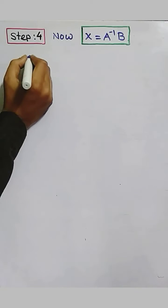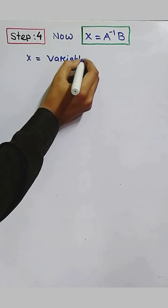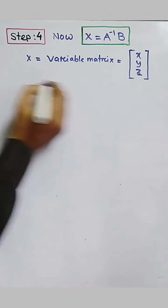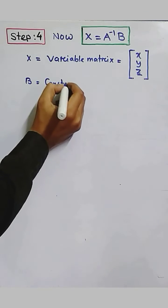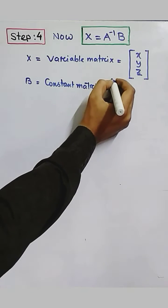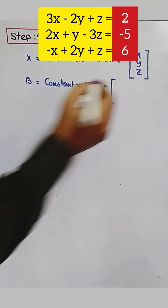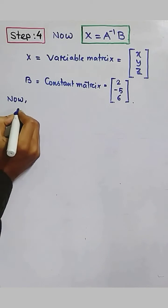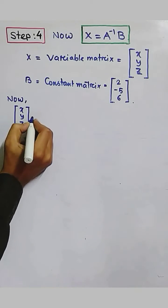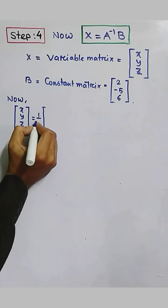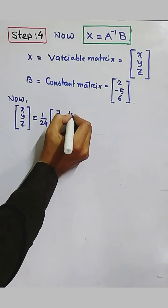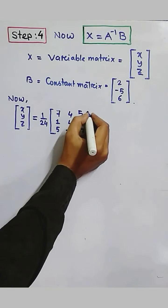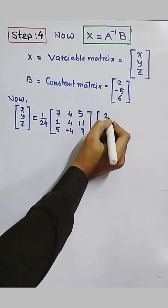Now going to the last step: X equals A inverse B. X is the variable matrix with variables x, y, and z. B is the constant matrix with values 2, minus 5, and 6. Writing in matrix form: [x; y; z] equals 1 by 24 times [7, 4, 5; 1, 4, 11; 5, minus 4, 7] into [2; minus 5; 6].